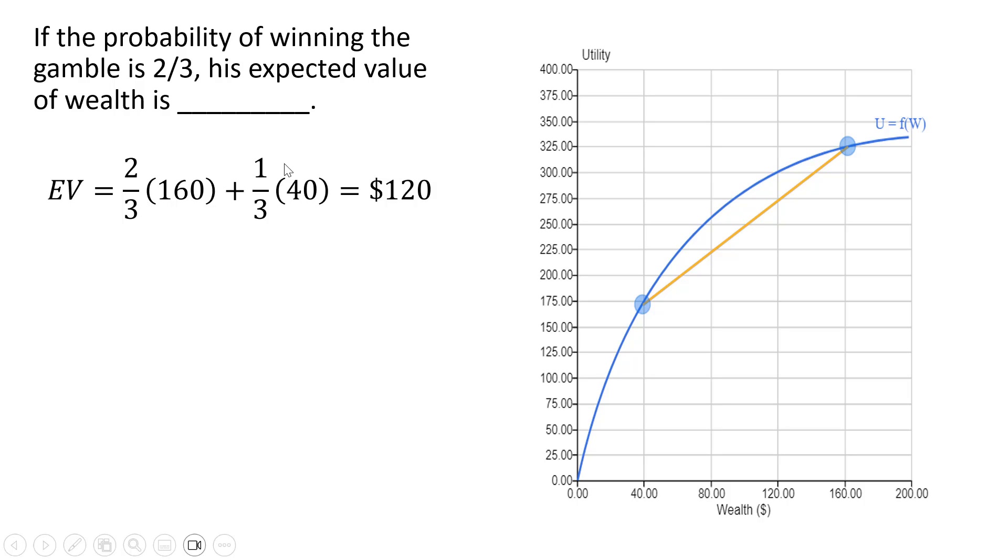On the other hand, there is a 1/3 chance that he will lose and have only $40. This gives us an expected value of $120.